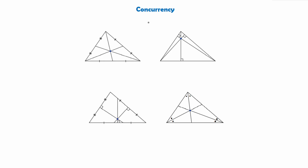With our definition of concurrency comes a few facts we need to know about triangles and some of the lines we've talked about. In this first diagram you can see we have a triangle, and every triangle will have three medians. If you remember, a median goes from a vertex to the midpoint of the opposing side. Here are the three medians of a triangle and as we can see, all three medians cross at this blue point right here — so we say that the medians of a triangle are concurrent, as all three medians pass through one point.